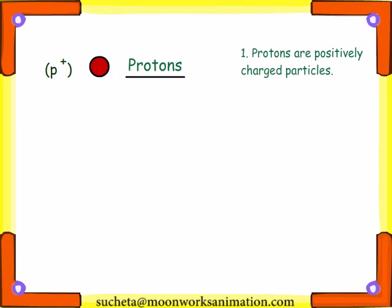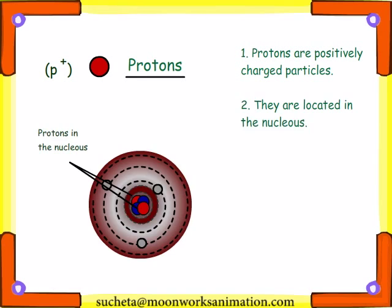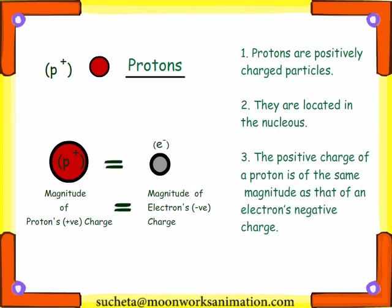Protons are positively charged particles. They are located in the nucleus along with the neutrons. The positive charge of a proton is of the same magnitude as that of an electron's negative charge.